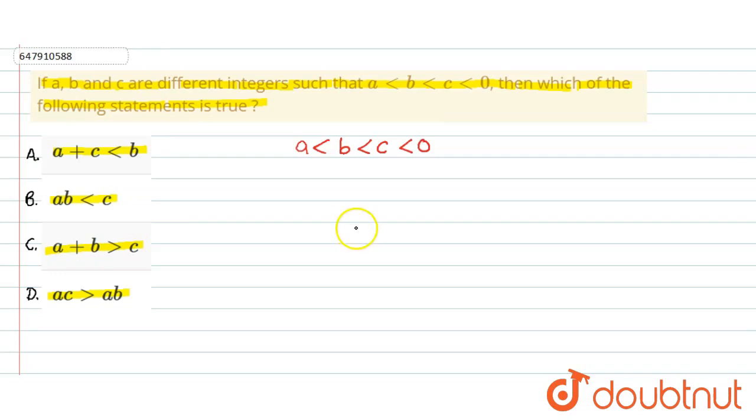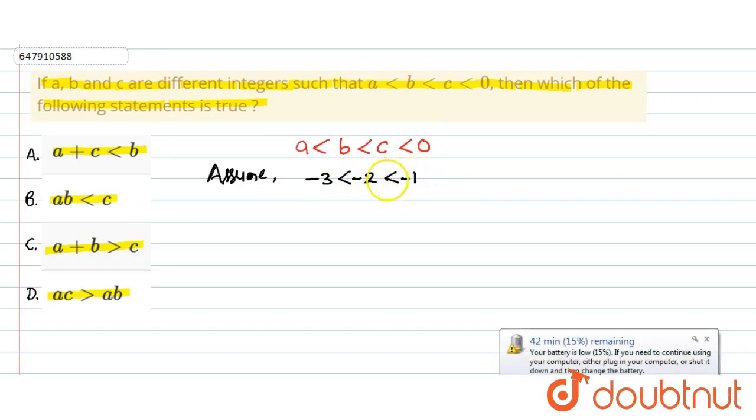Here we are going to assume these values. We have to assume the value of A. Assume A equals minus 3, C equals minus 1, B equals minus 2. And this is less than 0. Right. So now we will check which option is correct.